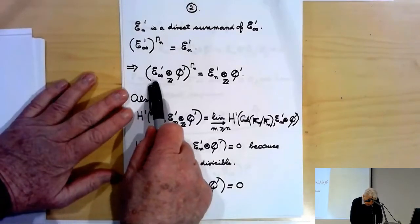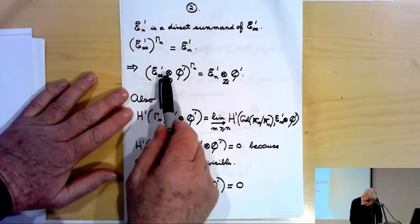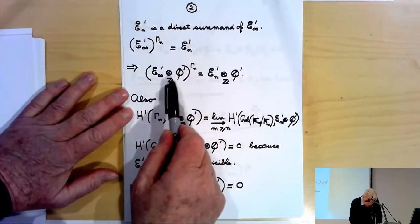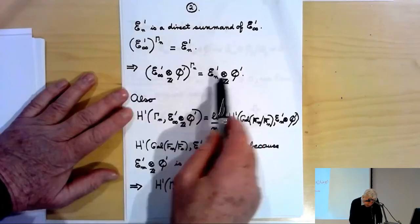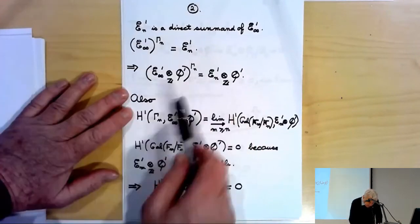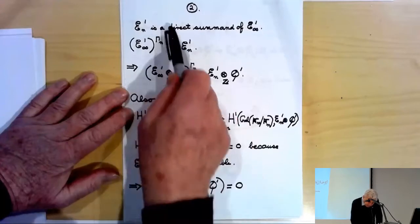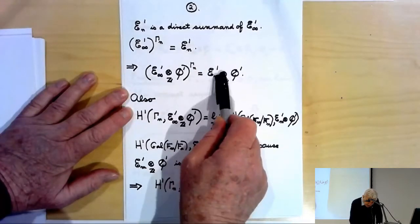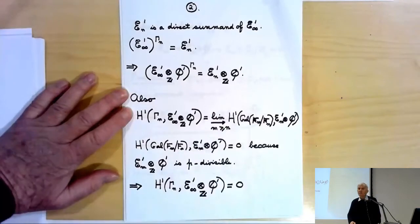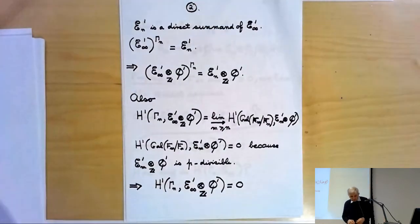As a result, it follows that (E∞' ⊗ Q')^{Γ_n}, because E_n' is a direct summand, will just be E_n' ⊗ Q'. All of this is completely straightforward algebra.